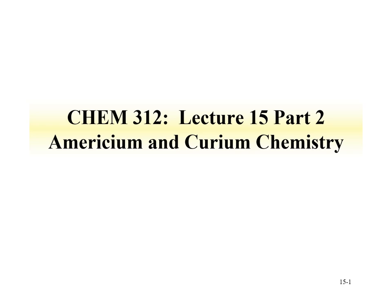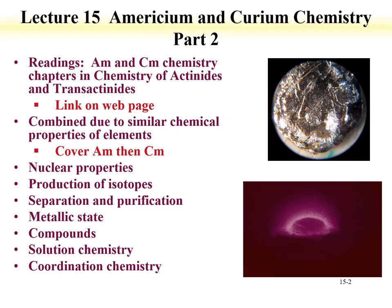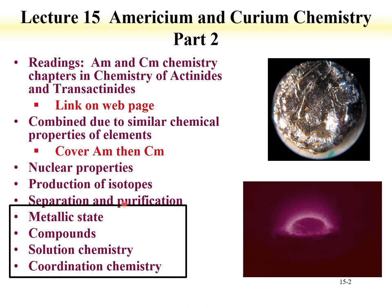Welcome to part 2 of lecture 15 for chemistry 312. This lecture is on the chemistry of americium and curium. The readings for part 2 are the same as part 1: the chemistry of americium, the chemistry of curium, and the chemistry of the actinides and transactinides. In this lecture, we're going to cover the metallic state of americium, americium compounds, americium solution chemistry, and coordination chemistry.